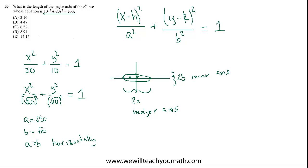And they want to know the length of the major axis. So it's 2a. a is root 20. 2 times root 20. Throw that in your calculator and you will get 8.94. That's choice D.